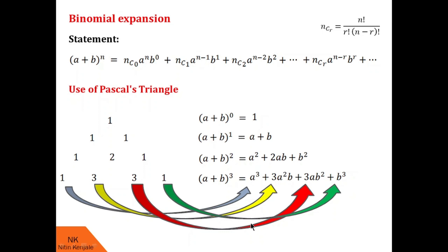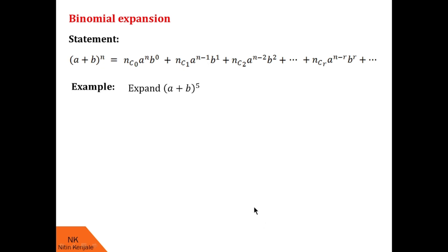The remaining elements in the expansion are formed as follows. The first variable, a, gets the highest power in the first term and its power decreases by one in every subsequent term — so we have a³, a², a¹, a⁰. Similarly, b gets the lowest power in the first term, that is b⁰, and its power increases by one in every term — b⁰, b¹, b², b³. This is how the full expansion is constructed.